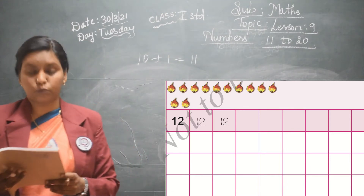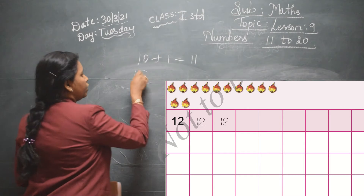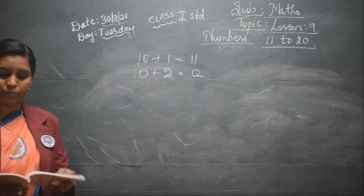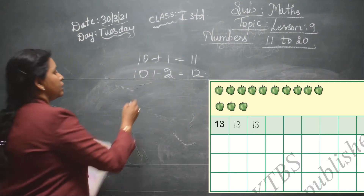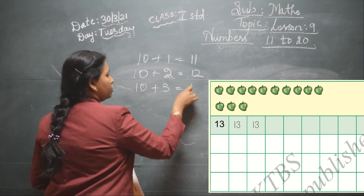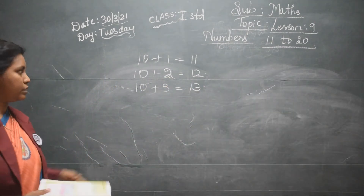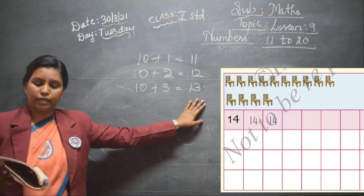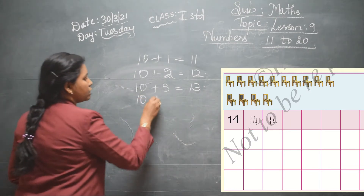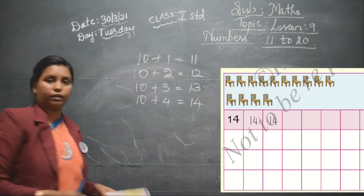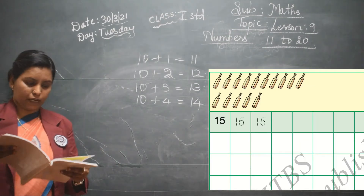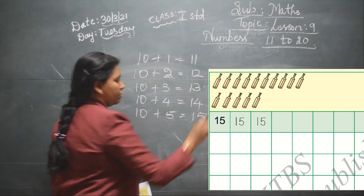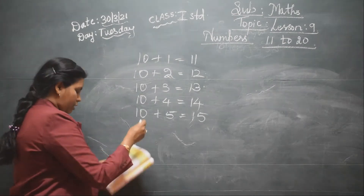Below that they have given you the picture of 12 objects: 10 plus 2 is equal to 12. Then on page 105 it is 10 plus 3 is equal to 13 — this is the tens number and this is the units number. Then next is 10 plus 4 gives you 14.